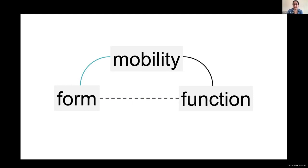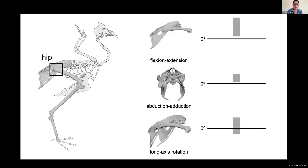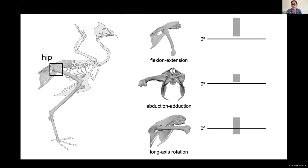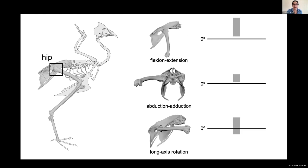If you want to go straight across from form to function, especially for non-human animals and especially for extinct animals, you often have to make several assumptions about causation even if you can identify a correlation. Introducing mobility allows us to say: with the shape of the anatomy you have, what is your kinematic potential, what joint poses could a joint assume? Mobility also allows us to say what subset of that kinematic potential do you actually use in life in any given behavior — bridging this gap between form and function. Traditionally, mobility has been measured by breaking down rotations into three degrees of freedom: flexion/extension, abduction/adduction, and long axis rotation.